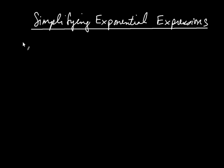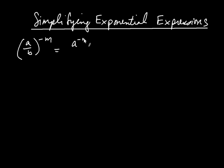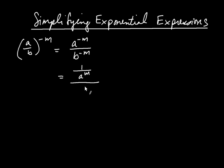If you have something like a divided by b raised to the negative m, that negative m applies to both a and b. So you can write that as a to the negative m divided by b to the negative m. And then remember, a to the negative m is 1 over a to the m. So I can write that as 1 over a to the m. In the denominator, b to the negative m is 1 over b to the m.